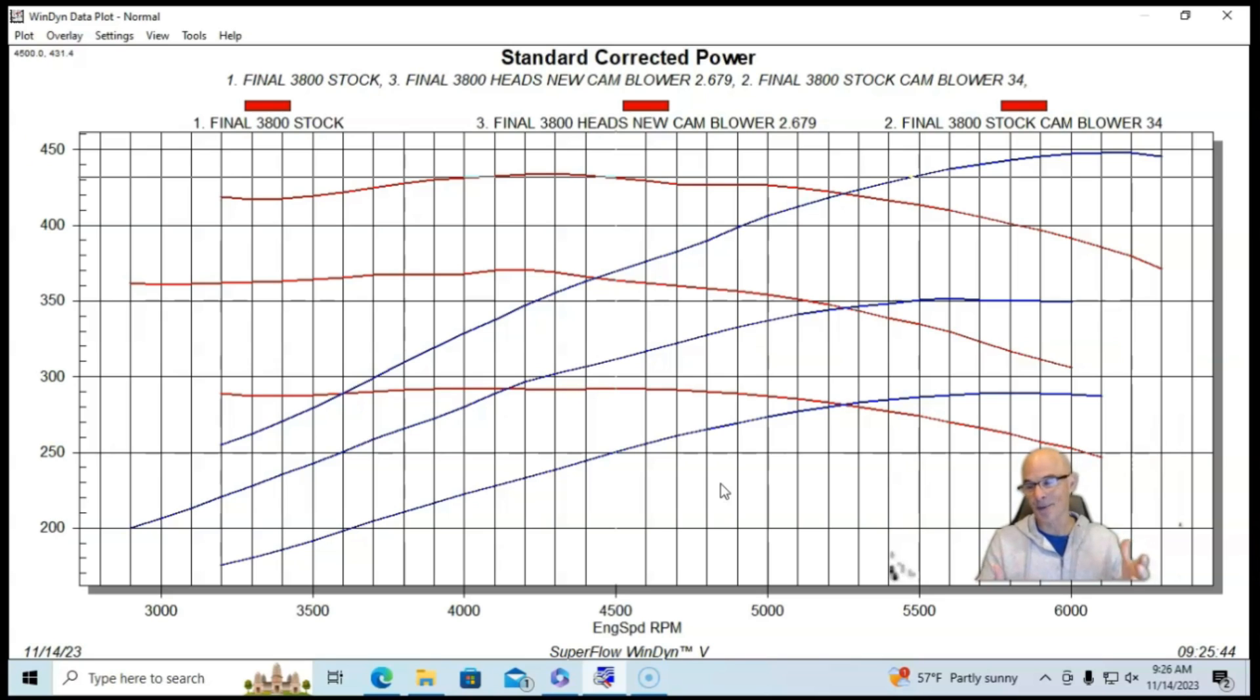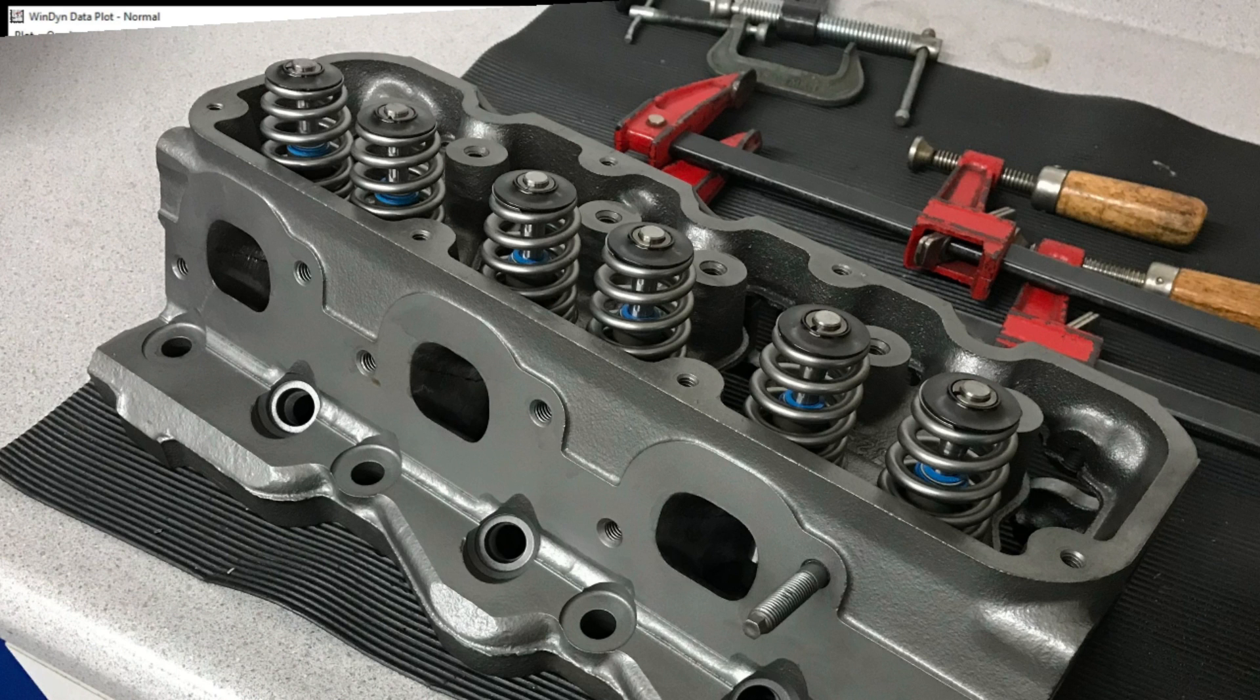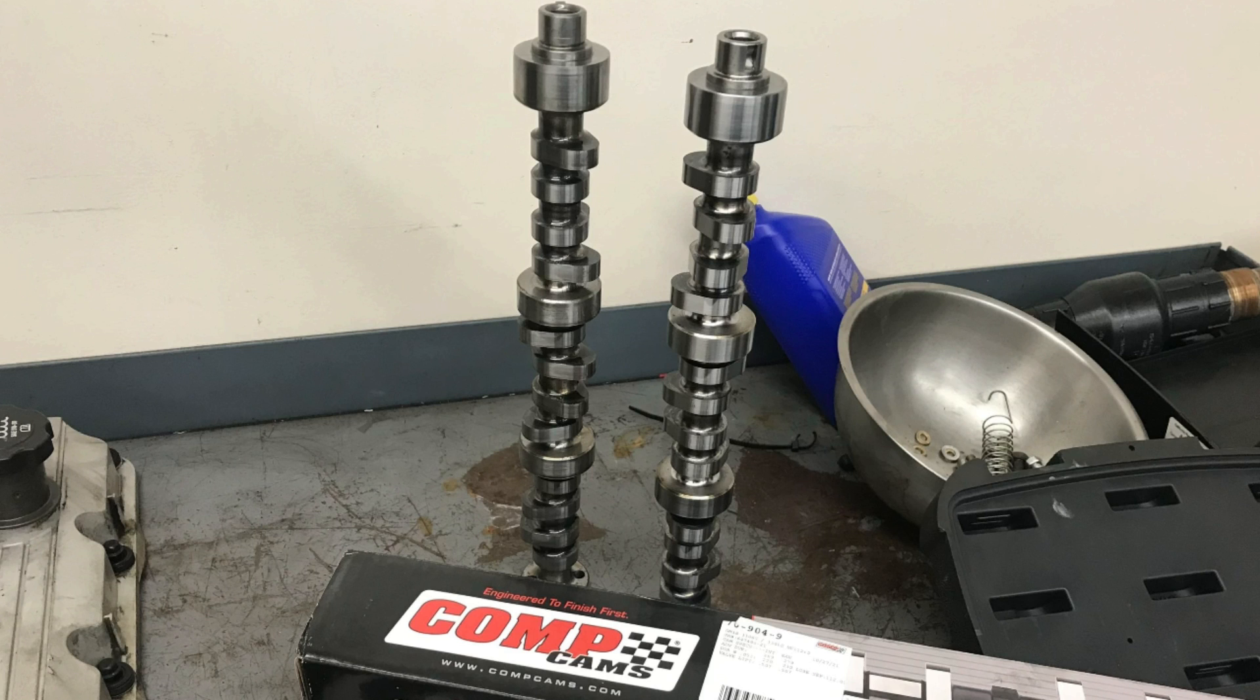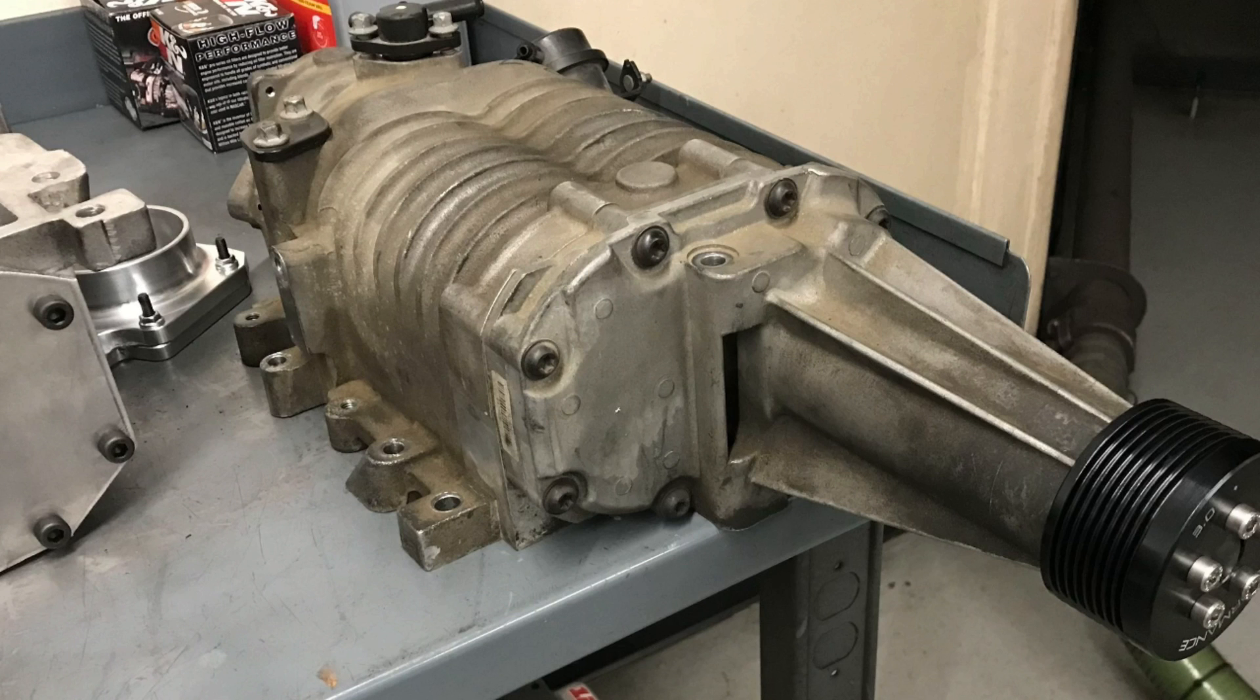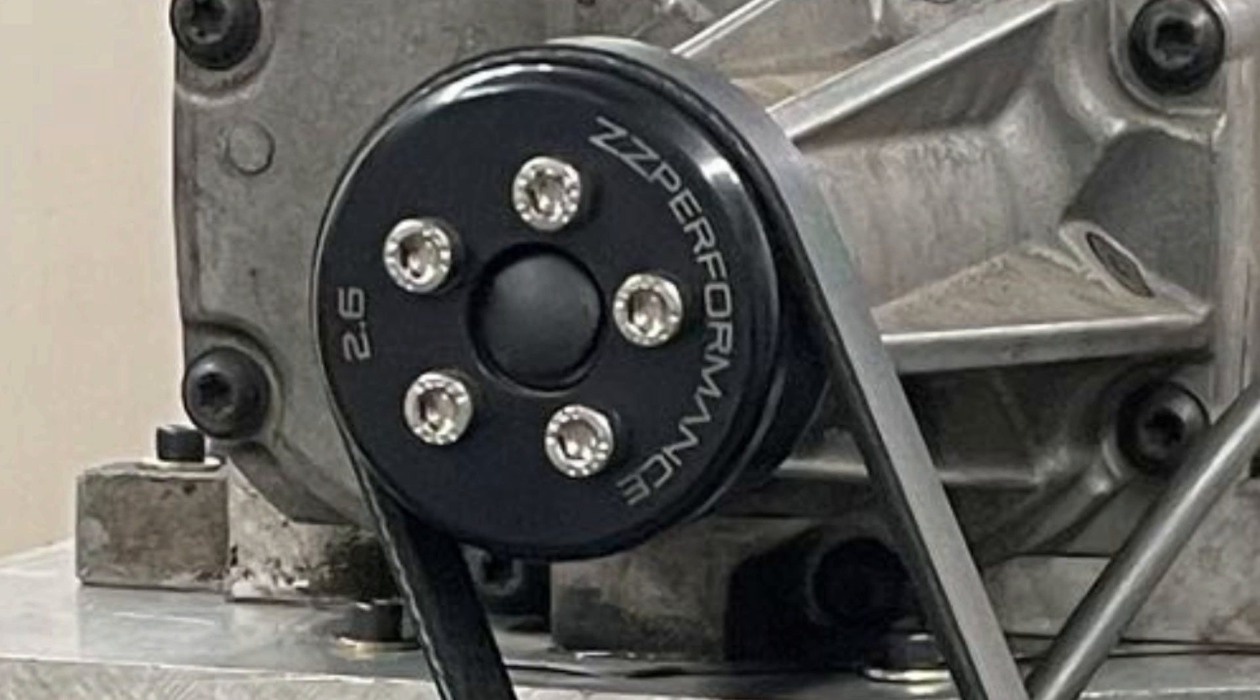We did not change the ring gap yet—it was untouched. We had ported heads on it, we had the ZZP cam, we had the L32 intake manifold but it was not ported, we had the Gen 5 blower, we had the 2.6 inch pulley, we had the stock throttle body and inlet on it.